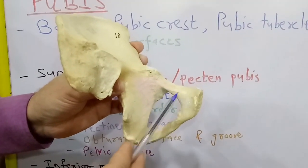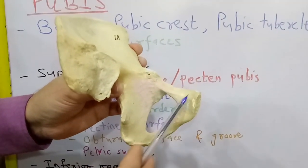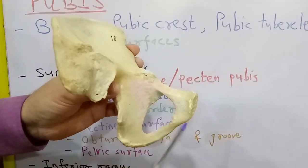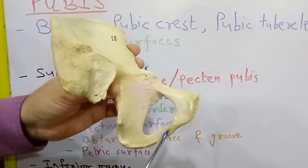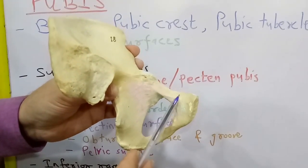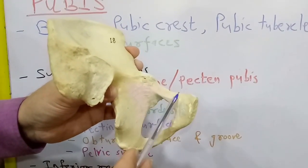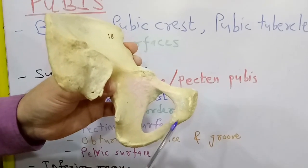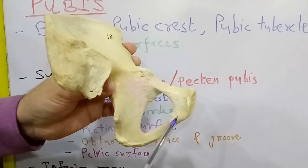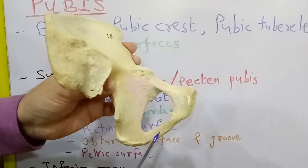The pubis has a body anteriorly. This is the body, and there are two rami: the superior ramus which passes superolaterally, and the inferior ramus which passes inferolaterally.